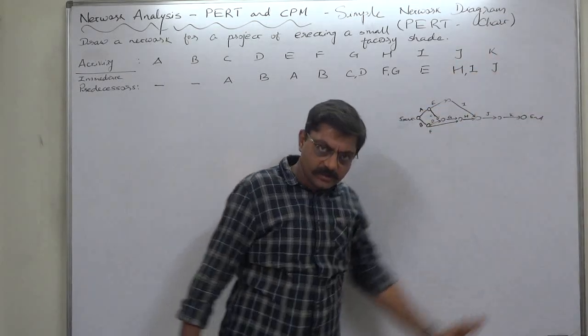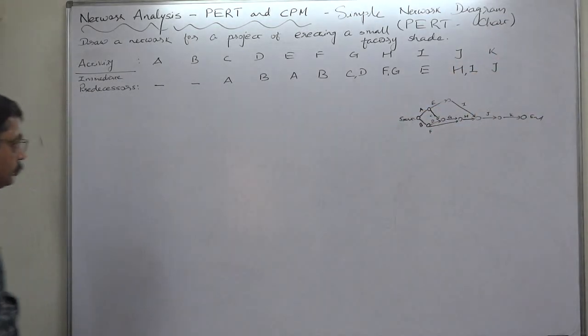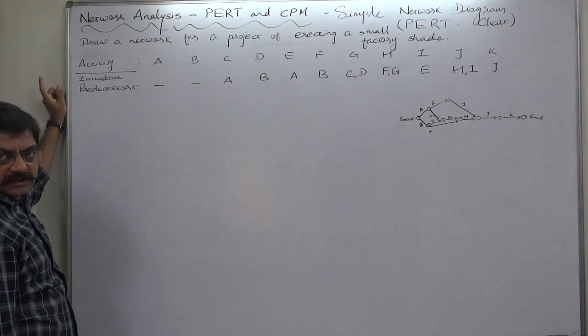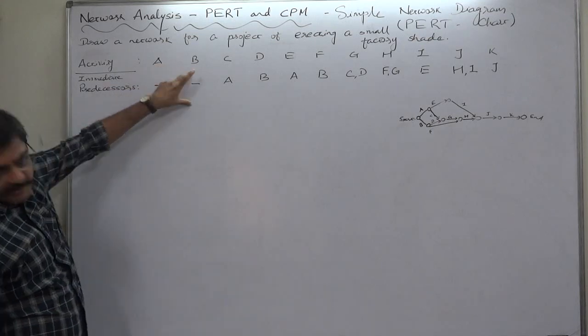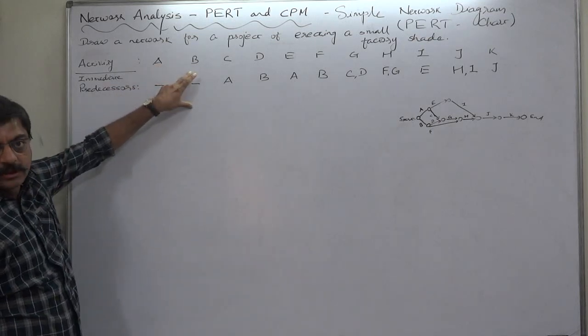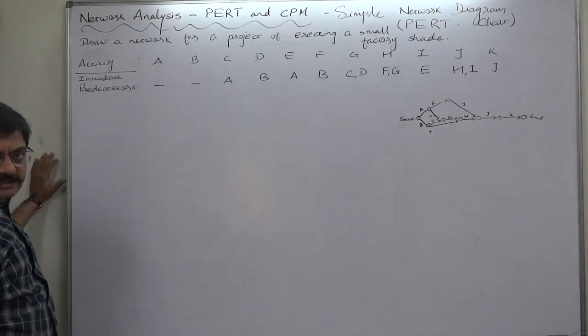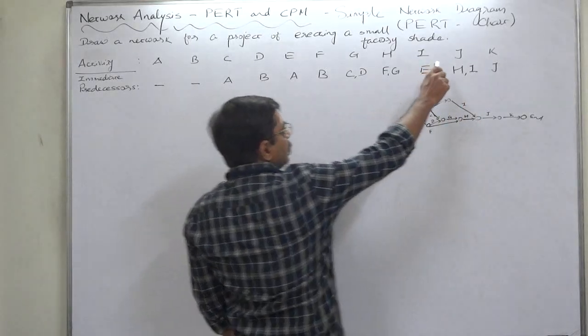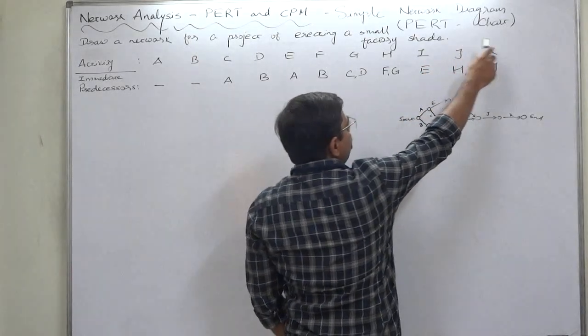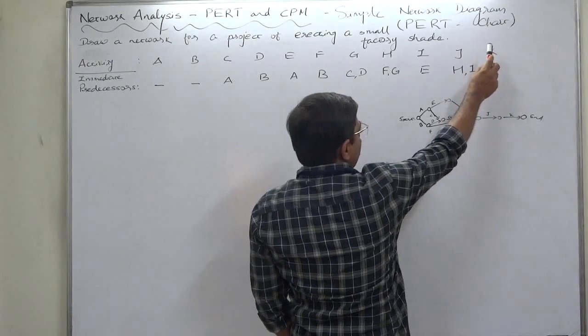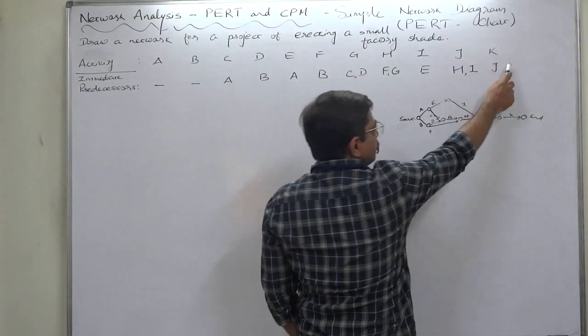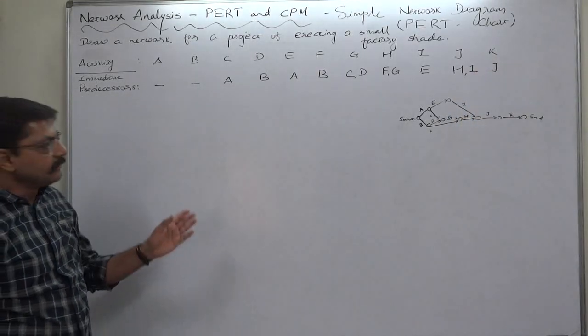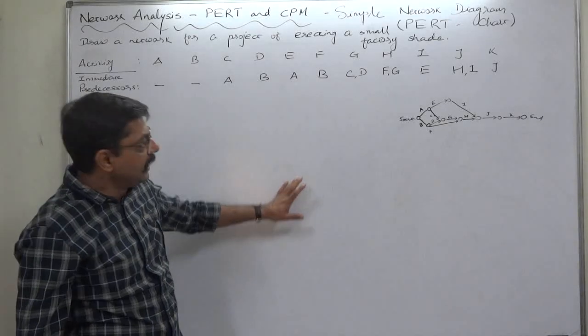Now, first of all, the project doesn't start with only one single activity—the project starts with A and B, two activities. So there will be no single arrow as a starting activity. But at the end, you can see that J has only one successor K, so J and K will be the single last two arrows.